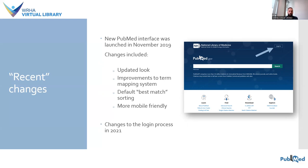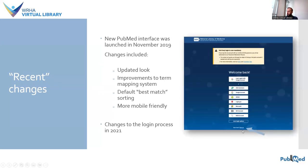Having an account isn't mandatory — you can use PubMed without one — but it does enable some additional features such as saving your searches for later, setting up email alerts, and creating bibliographies. You can create an account by clicking the login button in the top right-hand corner and then clicking sign up. Microsoft and Google accounts are both options you can use.